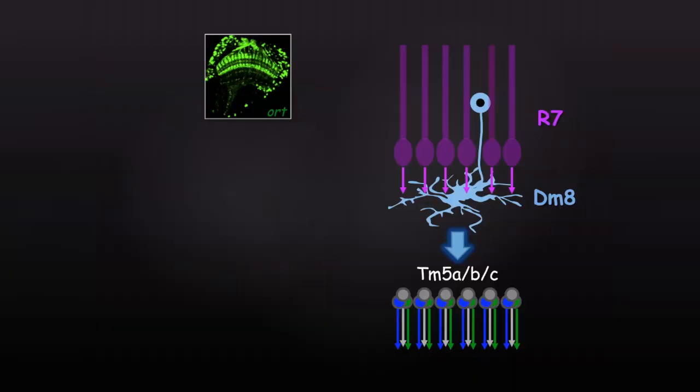My strategy is to inactivate specific neuronal subtypes and examine behavioral consequences, thereby establishing causality. To manipulate the functions of specific neuronal subtypes, we use the intersection technique to generate neural type-specific drivers.